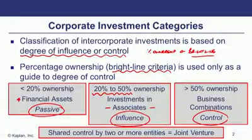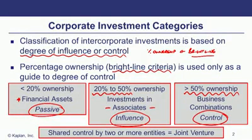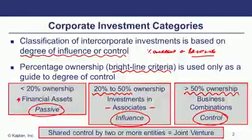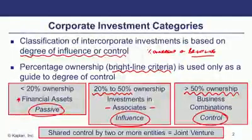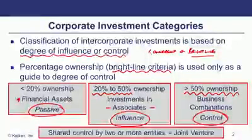If we have control over the other entity, we're talking about business combinations — specifically subsidiaries where we control investing, financing, and day-to-day operations. The bright line criteria used to be greater than 50% share ownership, since that allows you to appoint and remove directors. We also have shared control situations, which we refer to as joint ventures and joint operations.